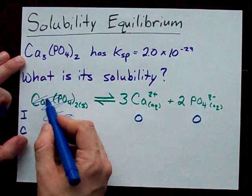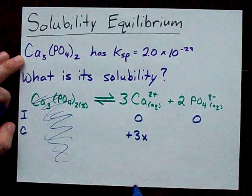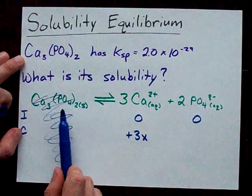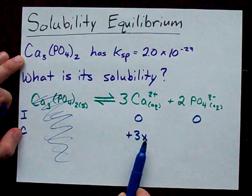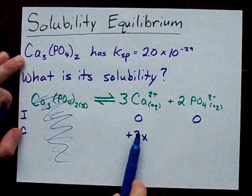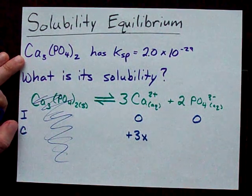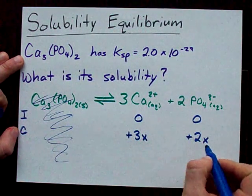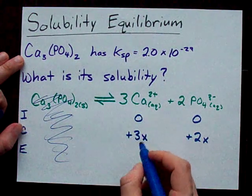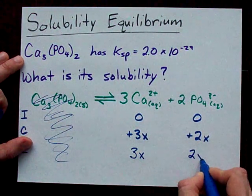The change? We lose some of this solid, but again it doesn't matter. We end up gaining some calcium. I'm going to say that the number of moles per liter of this that dissolved is x. And I get 3 times as many calciums as I lost of this. So I'm going to say that this is plus 3x. The 3 comes from the coefficient here. And I gain 2 phosphates for each of those steps. So my equilibrium concentrations of calcium is 3x moles per liter, and my equilibrium concentration of phosphate is 2x.